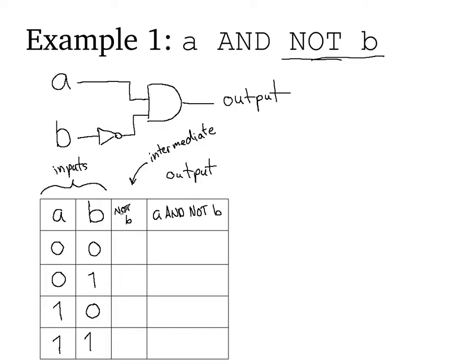So, now keep in mind, not B is not an independent input. It's dependent upon B. So we just look to the B column. Not B is 1 in this case. Not B is 0 in this case. Not B is 1 here and 0 here. But now we have all the information we need to compute the final output. And so I'm going to look to the A and the not B columns and AND those together to get the final answer.